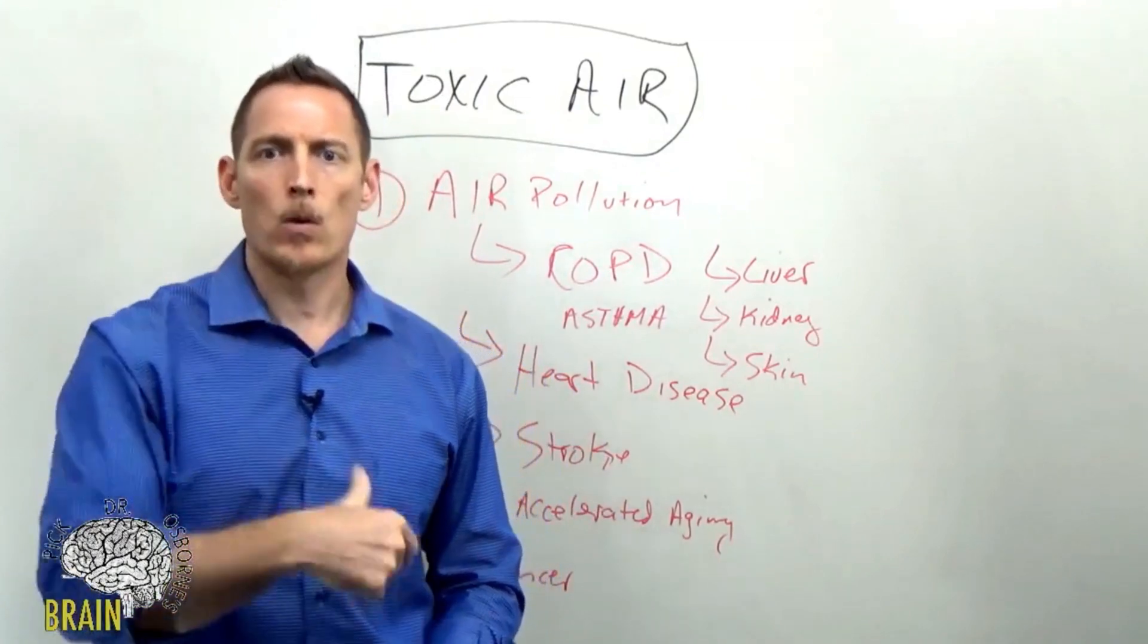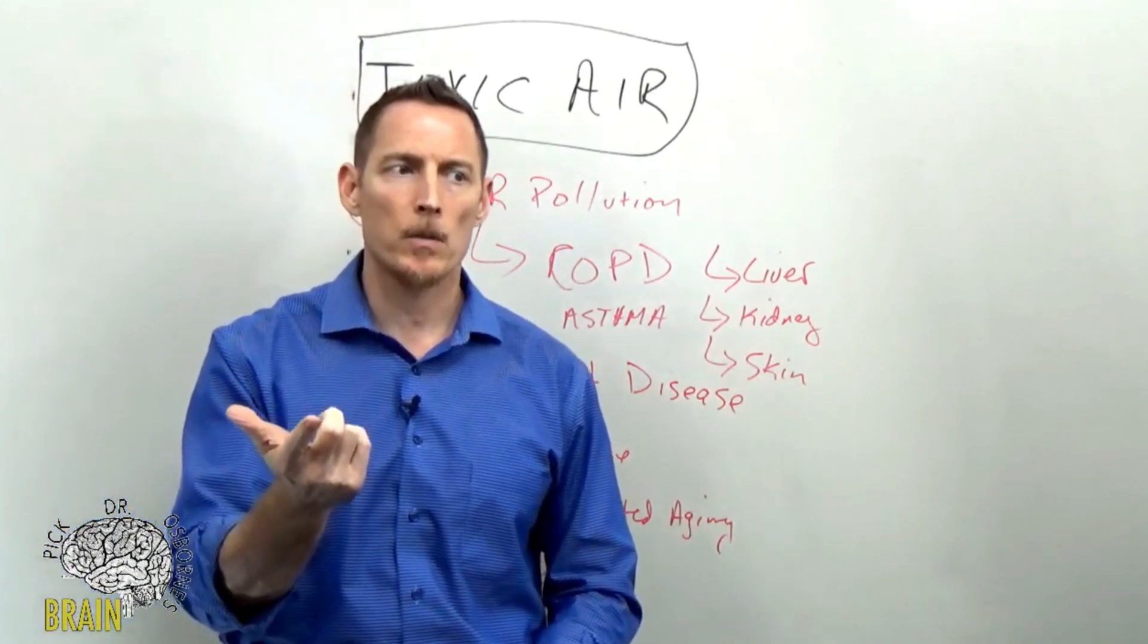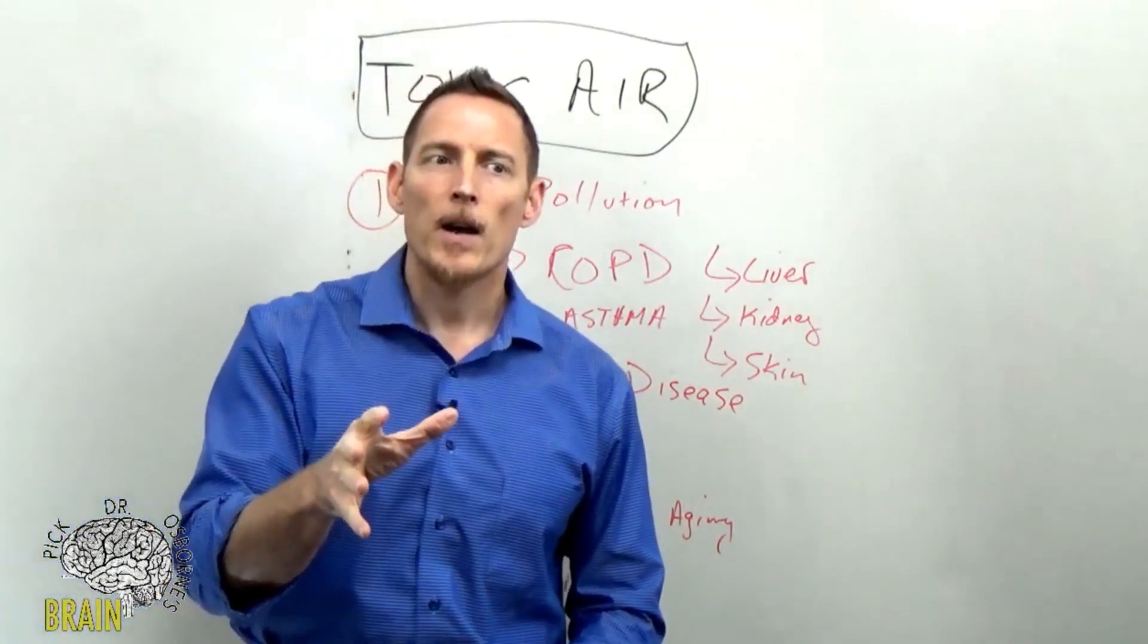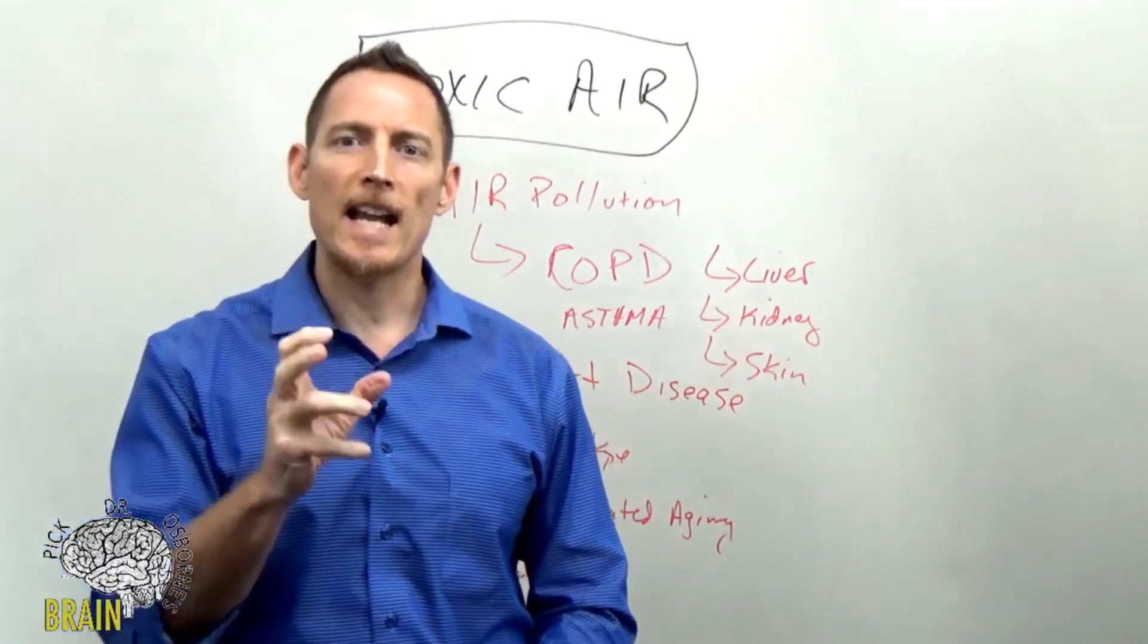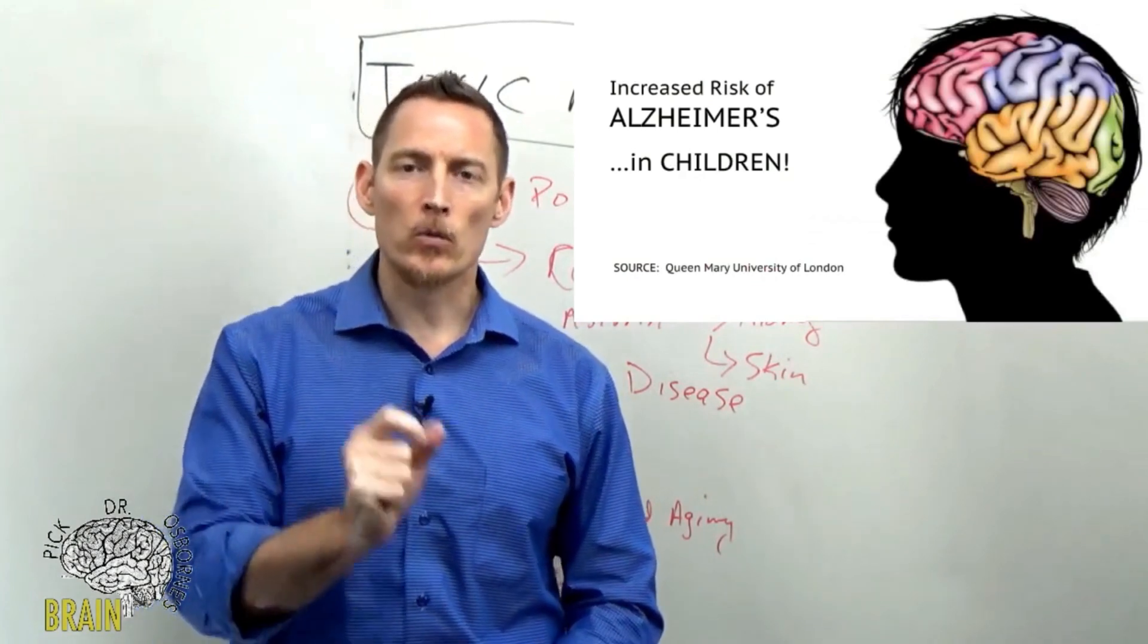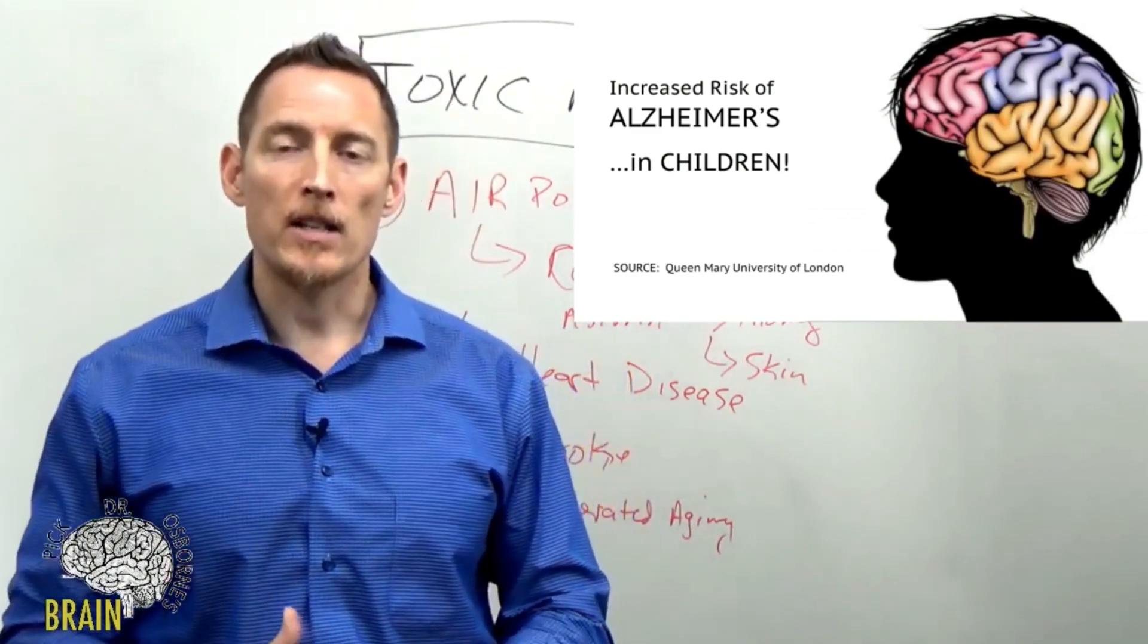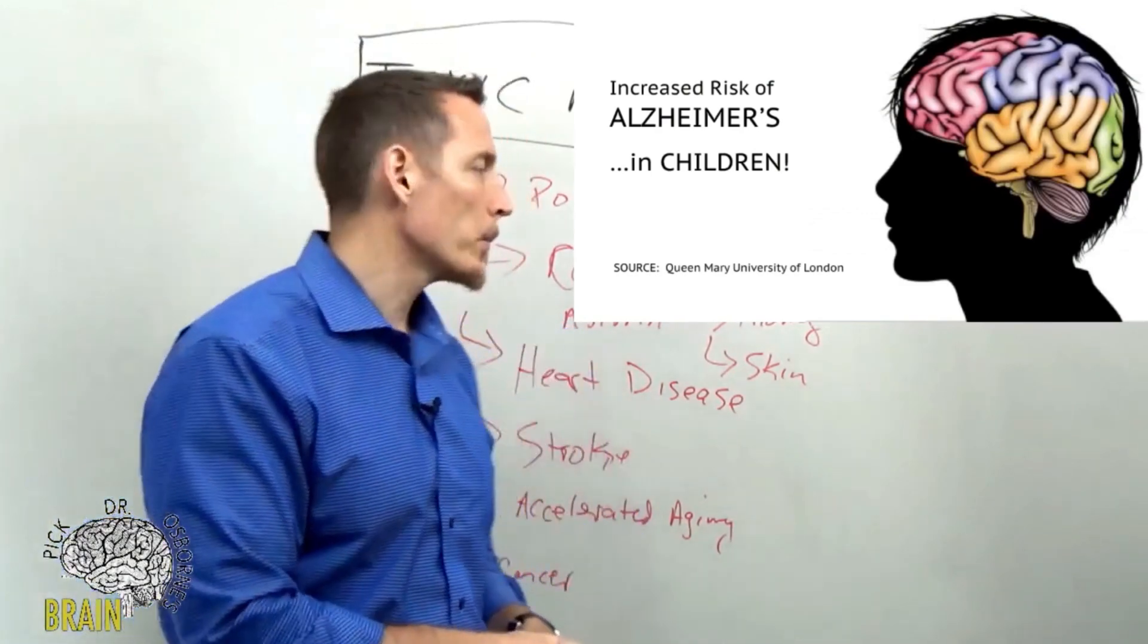I want to fast forward about four or five slides here. There's a picture I want to pop up on Alzheimer's in children, because that's one. So what you're looking at here from the Queen Mary University in London, showing that poor air quality can actually contribute to early increased risk of Alzheimer's in kids. So bad air quality can lead to a dementia or contribute to increased risk of developing dementia later on in life. Very important.